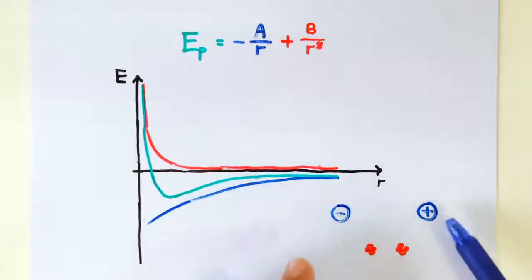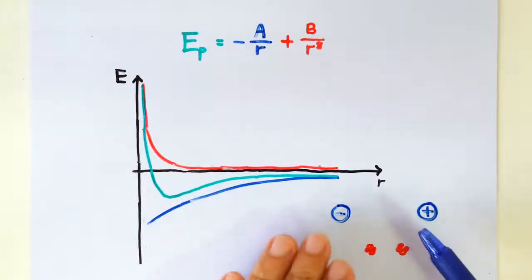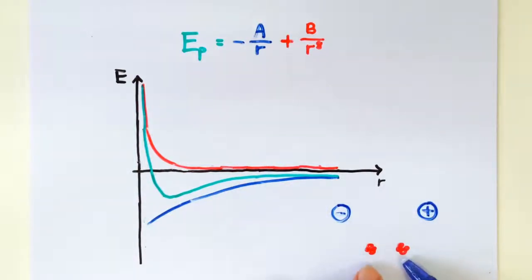But when the two ions are very close together, the interaction now becomes mainly between the two positively charged nucleus, which is a repulsive force.